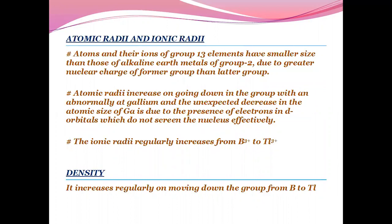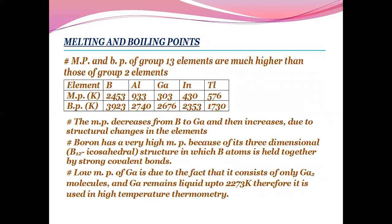The ionic radii regularly increases from boron to thallium. The density decreases regularly on moving down the group from boron to thallium.